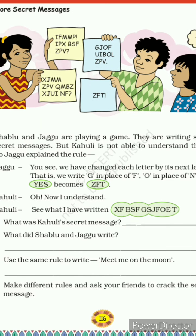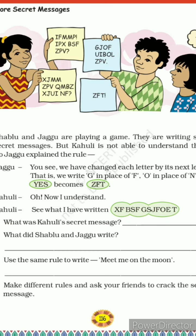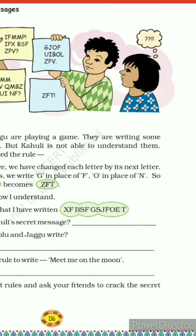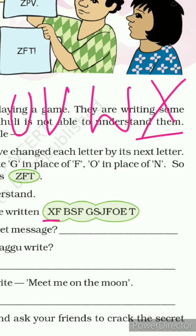So now Khawli said, 'Oh, now I understand.' See what I have written here. Aapko batana hai ki yeh secret message kya hai. So what was Khawli's secret message? Here the first letter is X. So U V W X — X aapka baad W ke baad mein aata hai, yaani ki X replacement hai W ka.